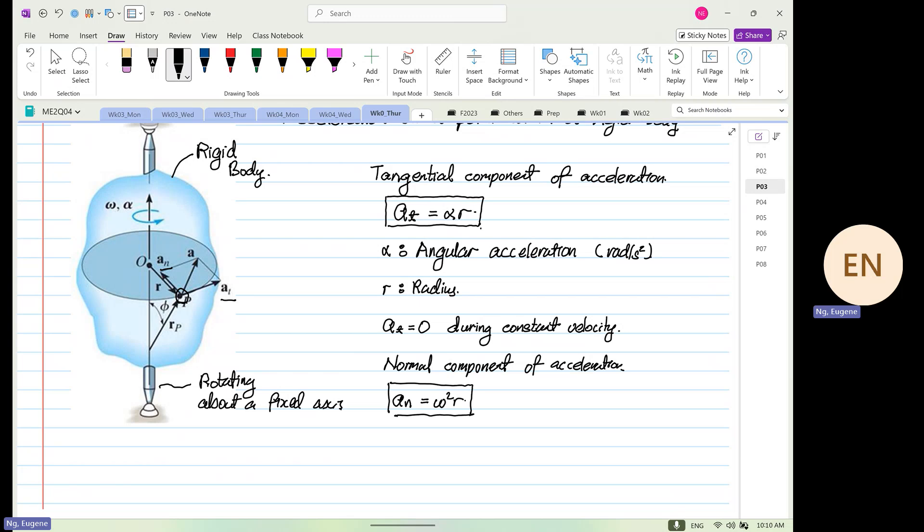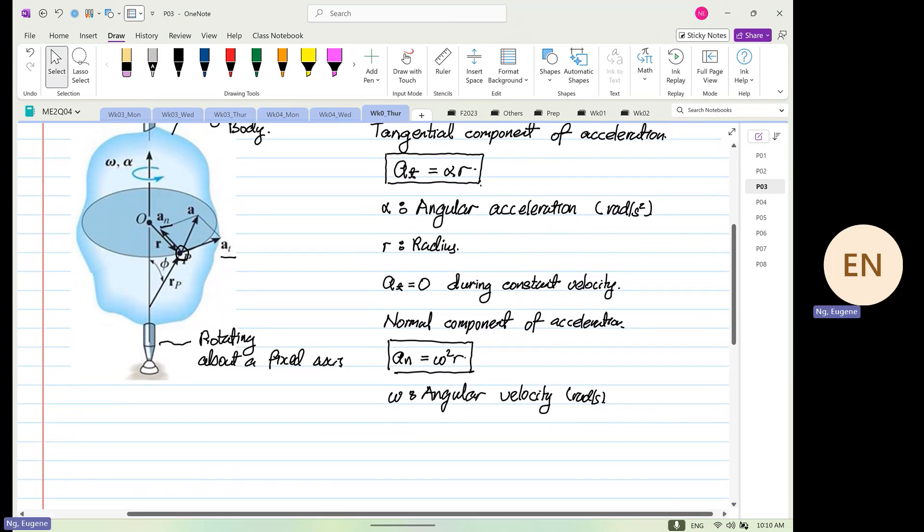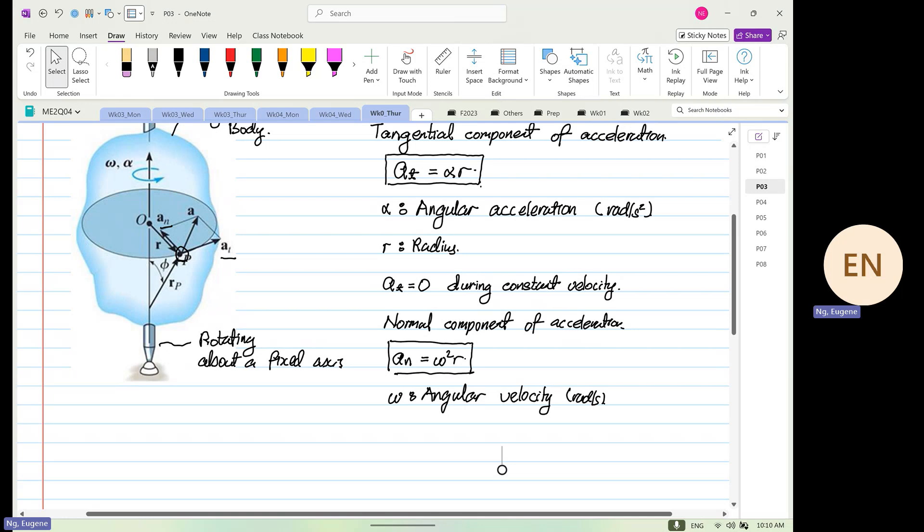And we can only feel omega squared r if it's rotating about a fixed axis. If you are heading straight, you don't feel it, but when you are going round about a center, you will feel it. How many of you love roller coaster? There you go. You love that sensation. Where omega is your angular velocity, and this is in radians per second. And a_n, I want you to take a note about what? The a_n direction.